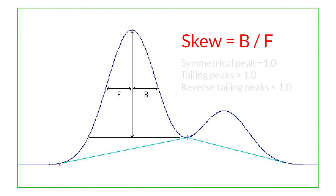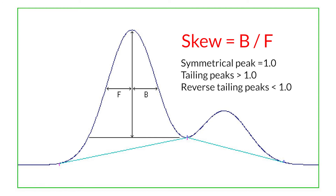Skew values are always positive. A symmetrical peak has a skew of 1.0, and a peak that tails has a skew greater than 1. Rarely, one encounters a peak whose skew is less than 1, indicating reverse tailing.